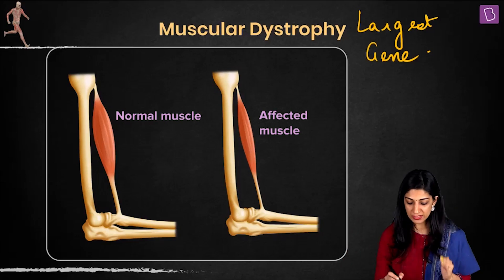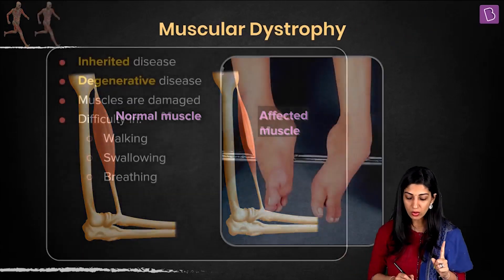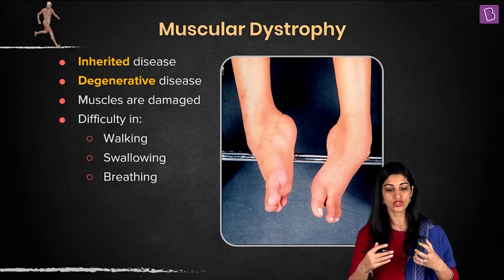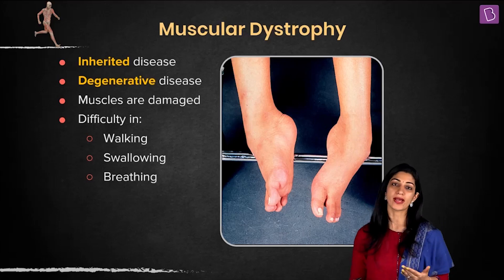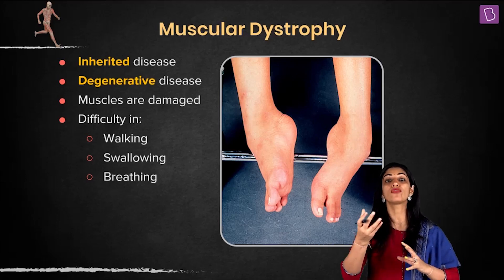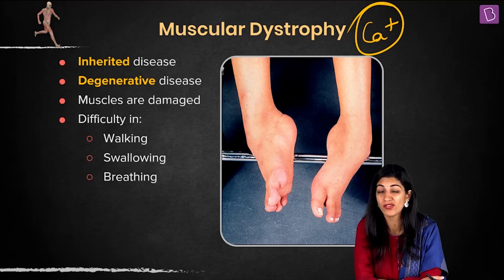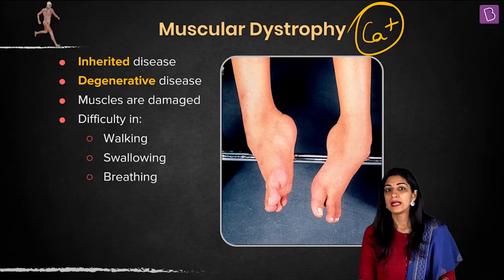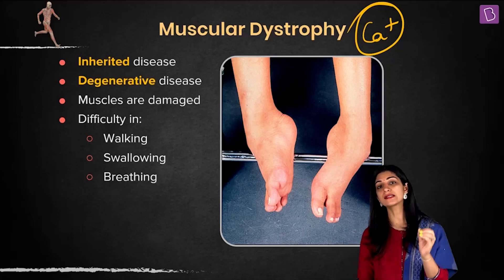In muscular dystrophy, the dystrophin protein is involved — the mechanism is complex and will be studied in class 12th. What is happening is that the structure of the skeletal muscle is not maintained. The skeletal muscles are not able to conform to a particular shape or form. Calcium is very important for muscle contraction — it triggers the process by binding with troponin — but in muscular dystrophy, this calcium is not released.